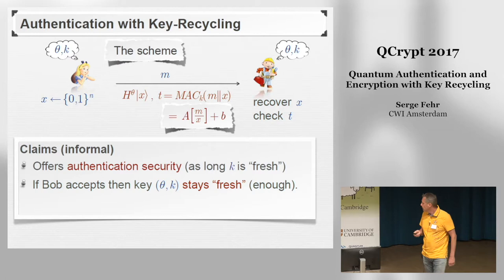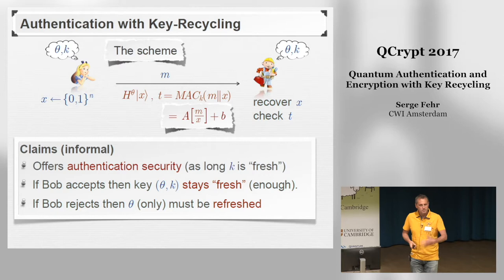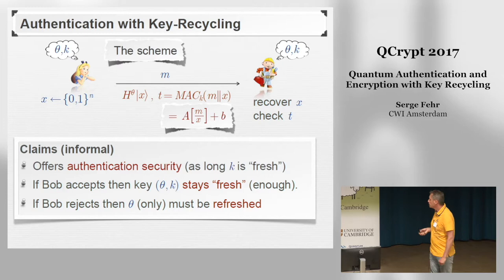Finally, if Bob rejects, then in general there is not much we can hope for, because Eve may have gained information on the key. Certainly some refreshing has to take place, but we can show it's good enough to refresh theta only, whereas the other part of the key K can still be reused.